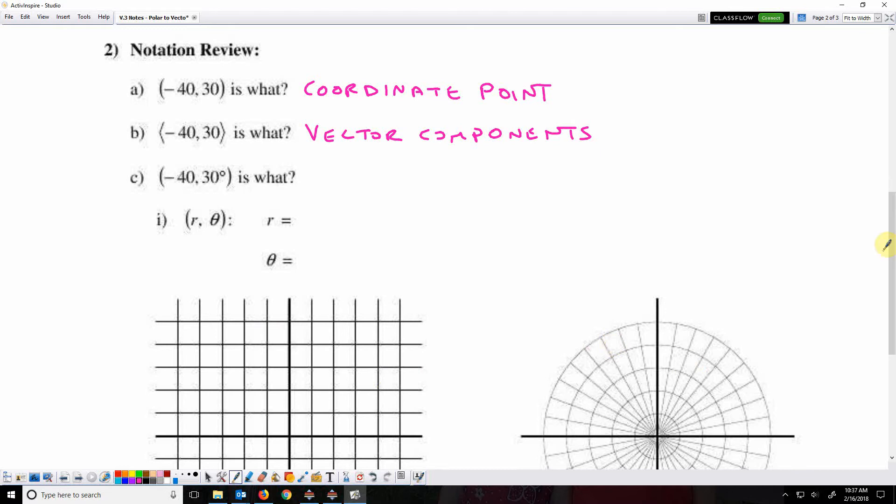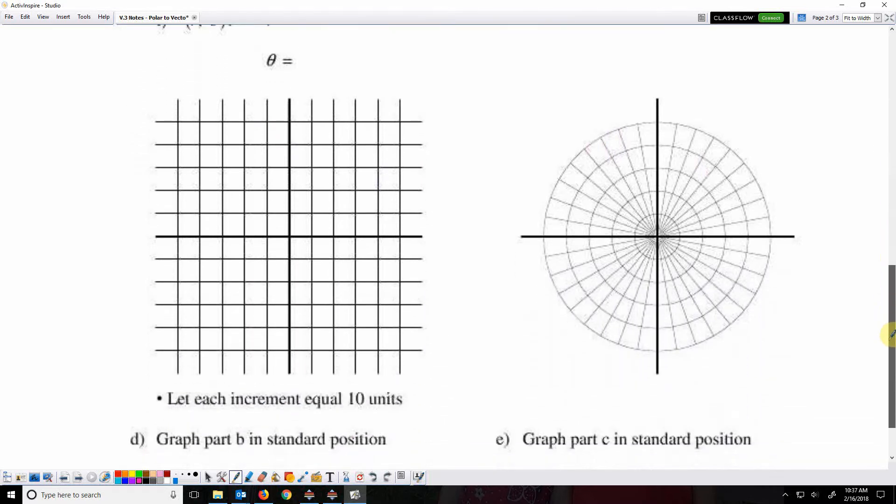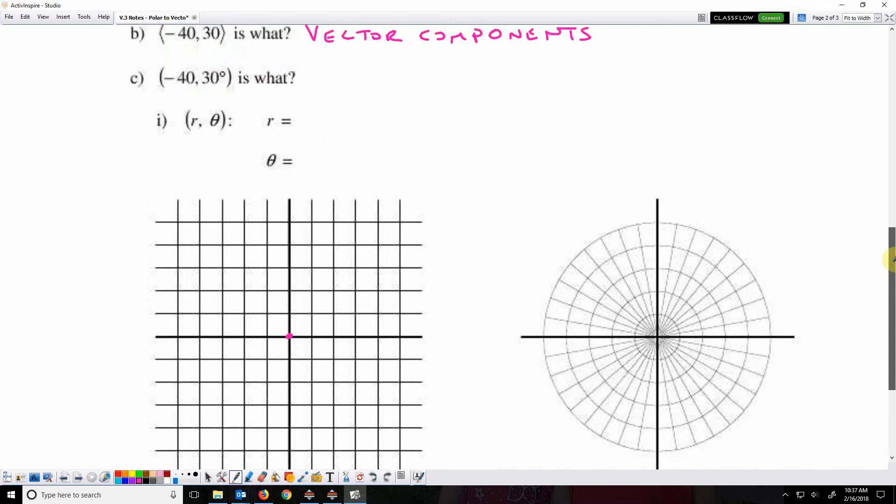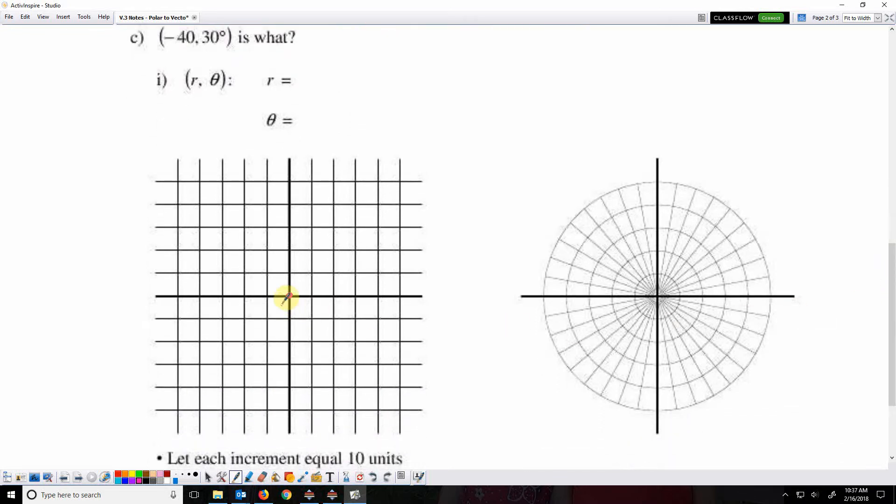Let's go down to this first graph and graph that. So it says we're going to graph part B in standard position, meaning we're going to start at the origin, and we're going to let each increment equal 10 units. So the components were negative 40, 30. So the x component means go 40 left.